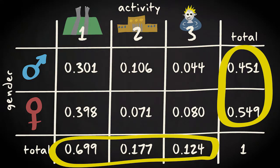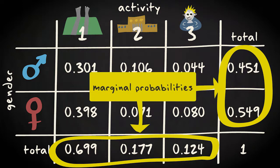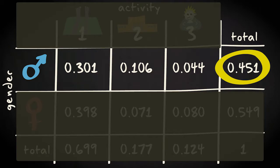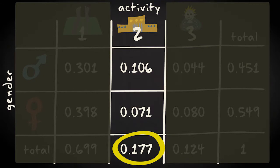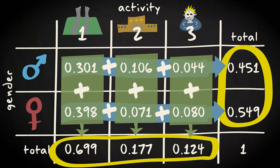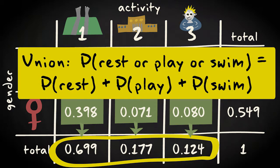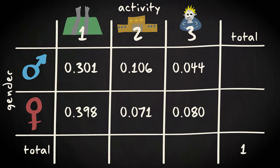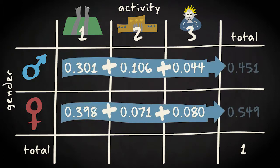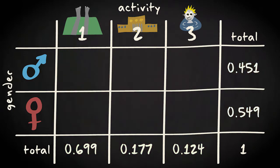In the margins you have, as you might expect, marginal probabilities. These give the probabilities when considering only one variable — for example, the probability that a given person is male regardless of his activities, or that any person would be playing regardless of gender. The marginal probabilities result from the union of the joint probabilities — for example, the probabilities of resting, playing and swimming per gender. So the addition rule applies: probabilities are summed. Consequently, if you did not have the original counts but only joint probabilities, you could always calculate marginal probabilities by summation. Conversely, if you were given only the marginal probabilities, you would not in every case be able to calculate the joint probabilities.